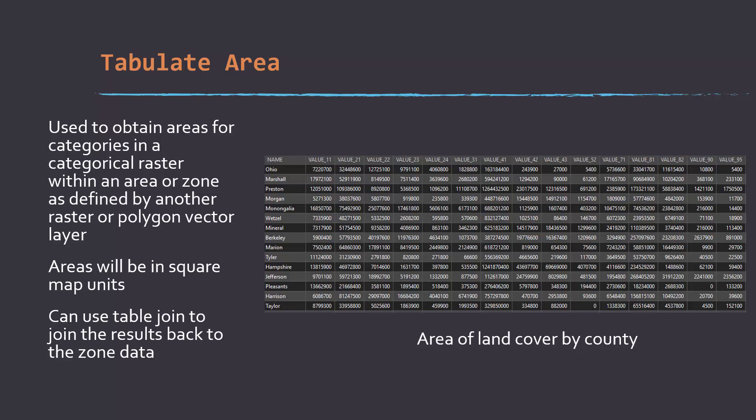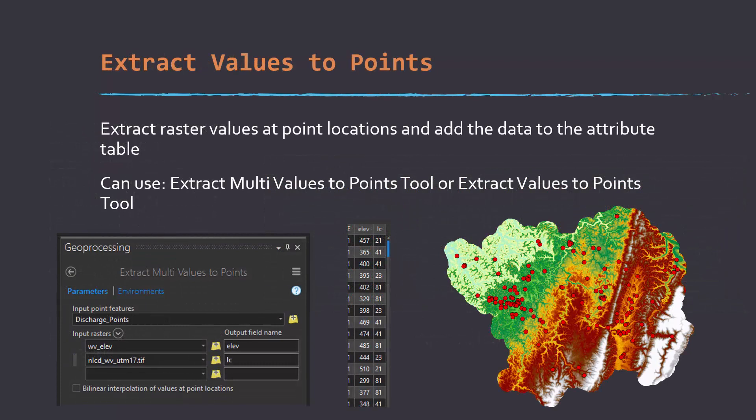And then with some table manipulation and math, you could convert those into proportions or percentages if you wanted. And if you're trying to extract values at points, the extract raster values at points and extract multi raster values at points tools can be used to accomplish that. So in this example, I have some points and I'm extracting the elevation and the land cover values at those points and those will get added to the table. You could then export that table out or you could read it in as a shape file or a feature class into R and to further develop the training set.